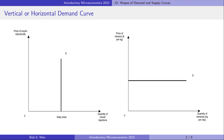A vertical demand curve implies that the quantity demanded is not sensitive to a change in the price, so that a change in the price does not affect the amount demanded. It happens if the good is a basic necessity that has no substitute — people have to consume it regardless of the change in its price. An example could be a diabetic patient's demand for insulin injections, where the quantity demanded is fixed at the daily dose.